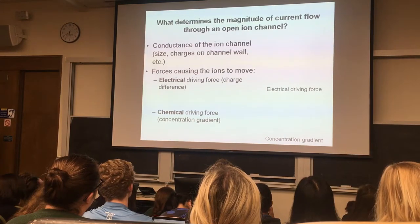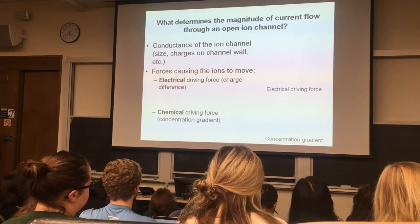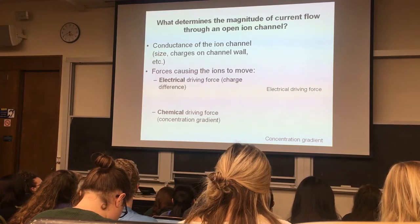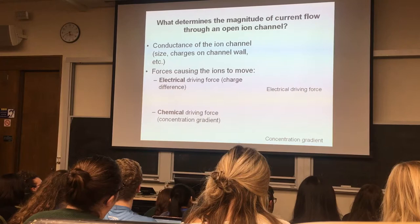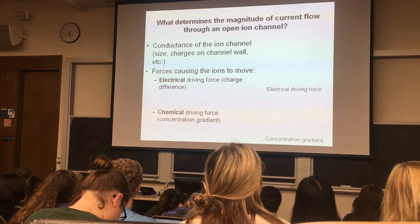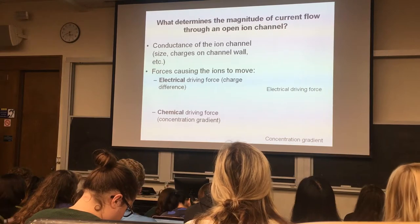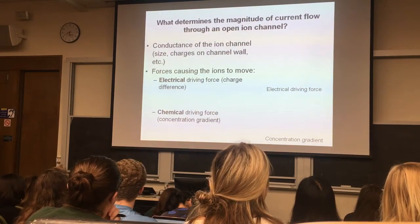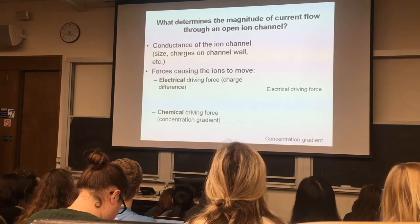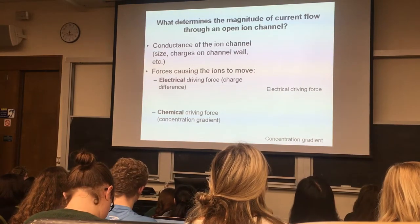What determines the magnitude of current flow through an open ion channel? This is determined by the permeability or conductance of the ion channel. If the channel is really big, ions can flow through easily; if it's small, only certain types of ions can flow through and they're somewhat hindered. Charges on the channel wall also matter — a negatively charged channel wall allows positively charged ions to flow through better than negative ions. These are factors that determine the amount of current flowing through an ion channel.